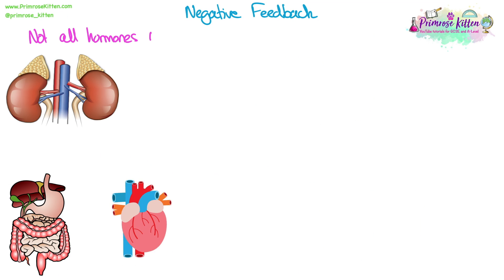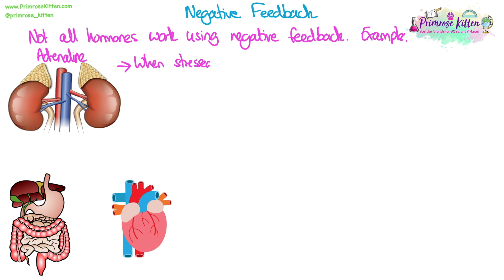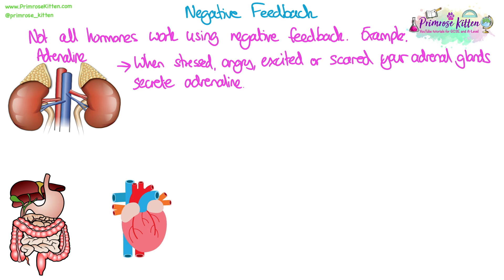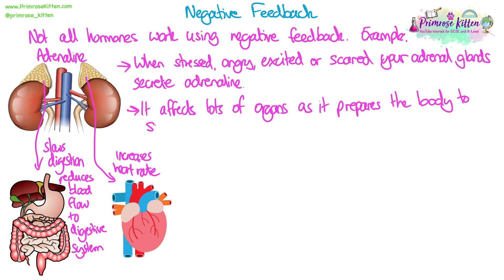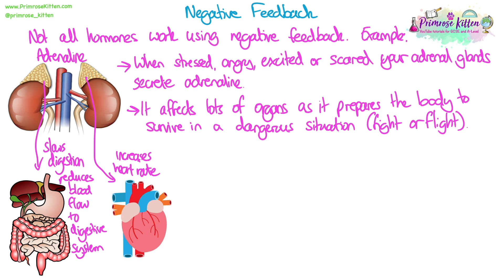Not all hormones work using negative feedback. Adrenaline is an example - your adrenal glands sit on top of each kidney. When you're stressed, angry, excited, or scared, your adrenal glands secrete adrenaline. It acts on many different organs: slowing down digestion, reducing blood flow to the digestive system, stopping enzyme secretion, while increasing your heart rate, breathing rate, and dilating your pupils. The idea is to increase blood glucose and oxygen going to your muscles, brain, and sensory organs to prepare for a potentially dangerous situation - the fight-or-flight response.